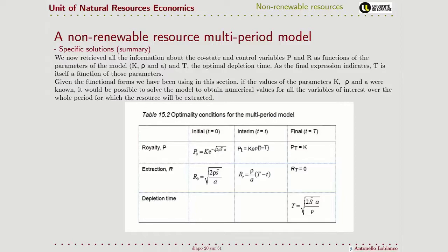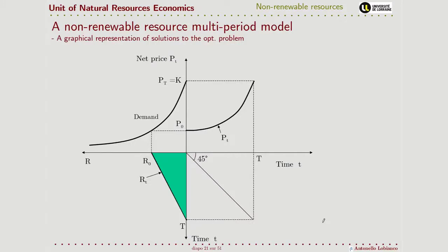To summarize, we found all the levels of the control variables that guarantee an optimization of welfare in our model, and the associated core state variables. We have the levels at the beginning and at the end of our optimization, and we found the optimal depletion time and the values at any time in between. The results are given in terms of the parameters of the model, but you can replace with numerical values to obtain a numerical solution.